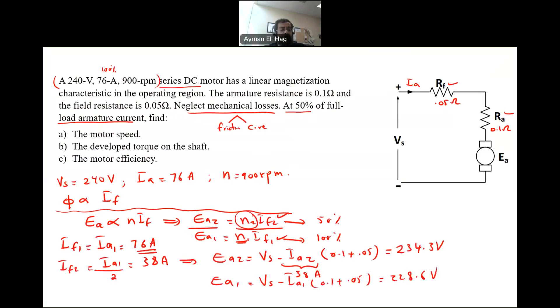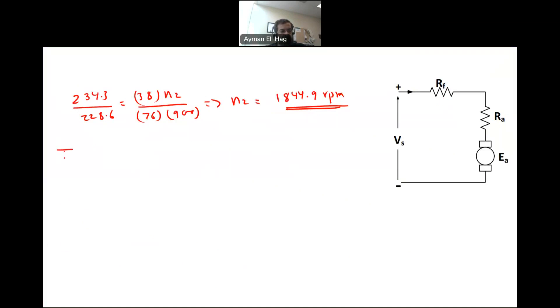We need to find the developed torque on the shaft. Torque that is developed, T developed, is equal to Ia times Ea. We want that to be at the 50% condition, divided by omega, of course. The current is 38 amps times the Ea equal to 234.3, which is at the 50% conditions, divided by omega, which is 2 pi over 60 times the speed that we just found here at this 50% condition, which is 1844.9. This will give me my torque, which is 46.1 Newton meter. This is the developed torque.